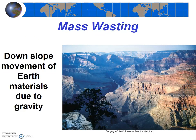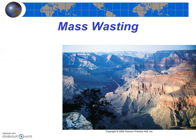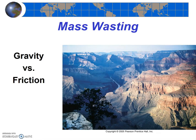Mass wasting is the downslope movement of earth materials due to gravity. Mass wasting is powered by the gravitational force pulling earth materials towards the earth. There is also another force working against the gravitational force: friction. I like to think of mass wasting as a battle between gravity pulling things down and friction resisting.